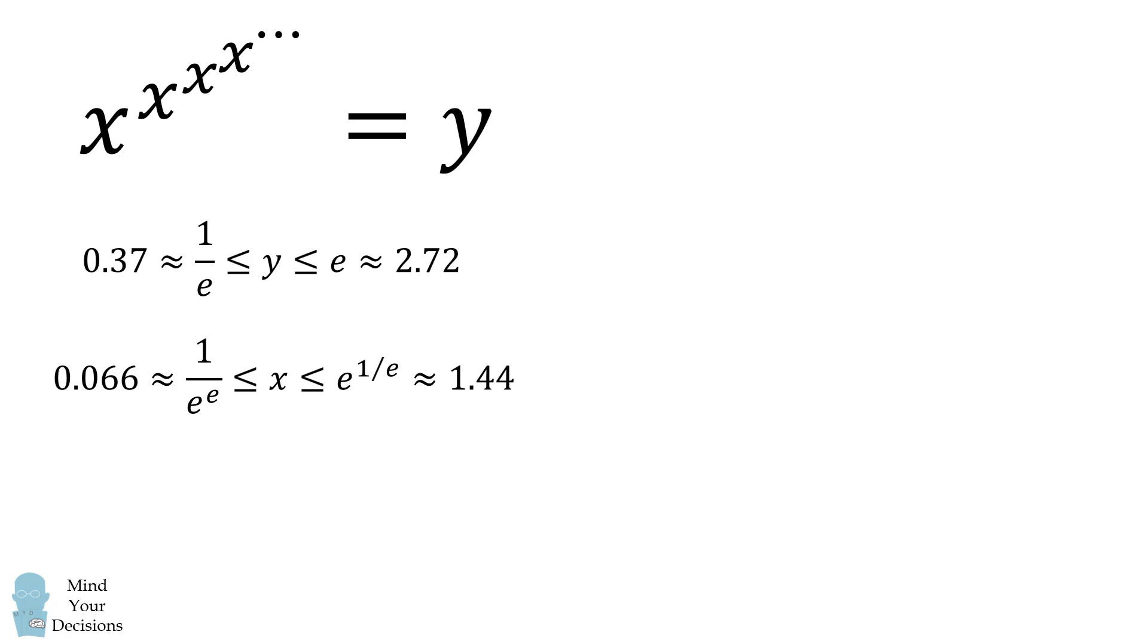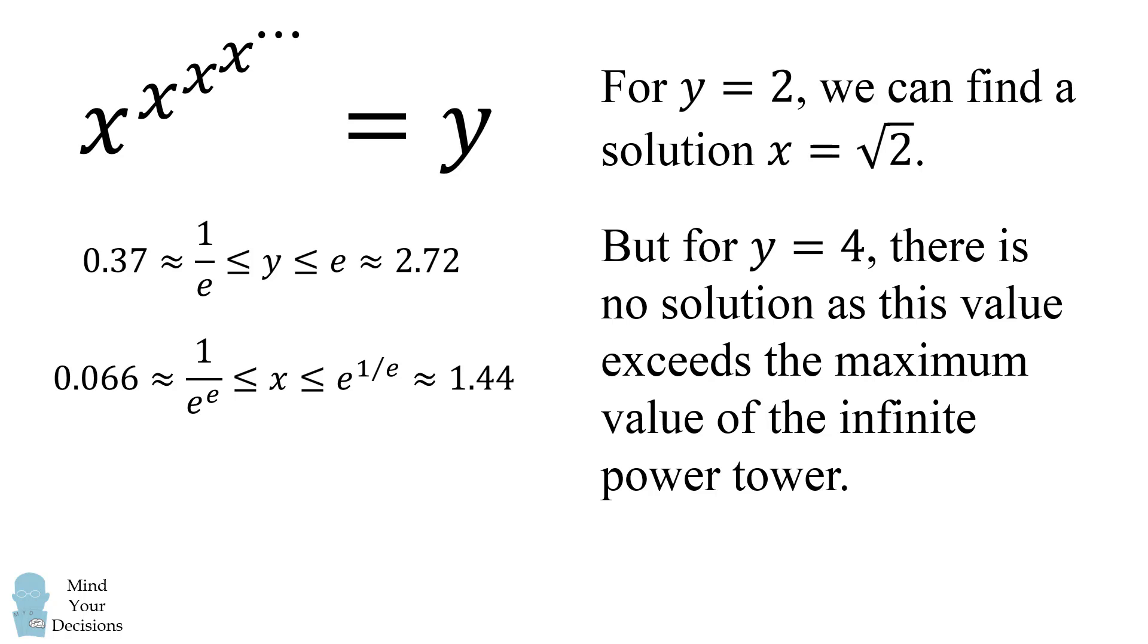So, to bring it back, for y equals 2, this is within the range of this function, so we can find a solution, x is equal to square root of 2. But for y equals 4, there is no solution, as this value exceeds the maximum value of the infinite power tower.